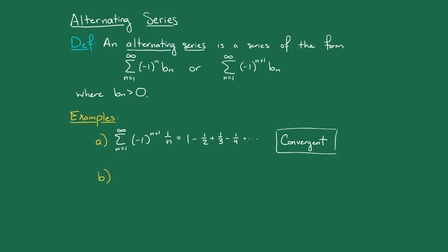Similarly, we could make this a series of the other form by changing it to the sum of minus 1 to the n, times 1 over n. And the same way, this series is also going to converge, and it converges to the negative of the number that the last example converges to.